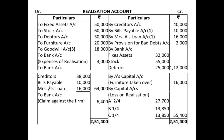Goodwill given in the balance sheet at the time of dissolution is transferred to the realization account just like other assets. Then to bank account for expenses of realization, and to bank account for liabilities paid — showing them all together with creditors 38,000, bills payable and Mrs. A's loan (assumed paid in full since no information was given). The total for liabilities paid is 64,000, and another entry for unrecorded claim paid to bank, 6,400.